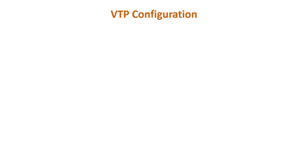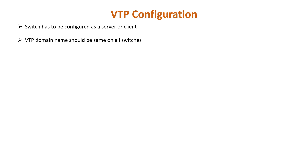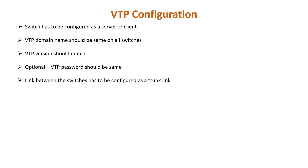To exchange VTP messages, the following requirements must be met: a switch must be configured as either a VTP server or VTP client; the VTP domain name must be the same on both switches; VTP versions must match; if present, the VTP domain password must be the same; and the link between the switches must be configured as a trunk link.